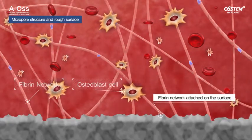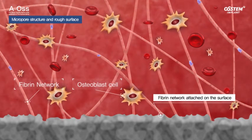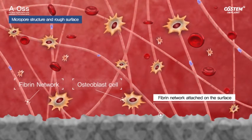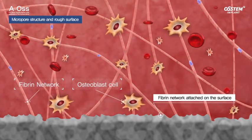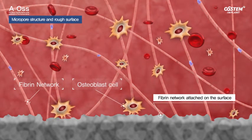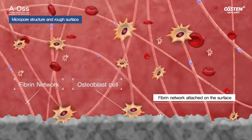On a surface with a microporous structure, the fiber network is attached to the surface. This makes it possible for the osteoblast cells to proliferate.